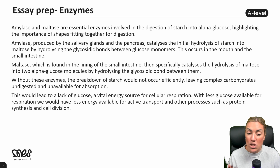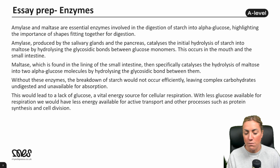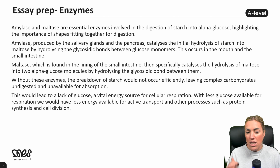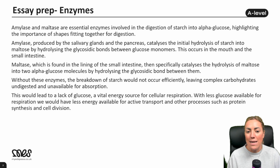This would lead to a lack of glucose, which is a vital source for cellular respiration. With less glucose available for respiration, we would have less energy available for processes that require energy, such as active transport, protein synthesis, DNA replication or cell division. What I've tried to do here is pick an example from a different part of the specification — module three digestion. I've used key A-level vocab: hydrolysis and glycosidic bonds. I've broken starch digestion into its two stages — initially into maltose then into alpha glucose — and I've linked it back to the importance of shapes fitting together and what would happen if those shapes did not fit together, which would ultimately mean less glucose available for respiration and less energy for energy-requiring processes.